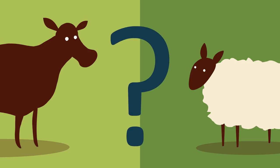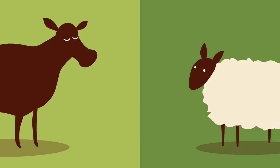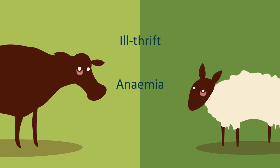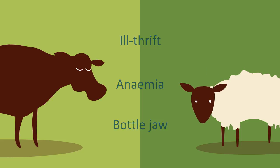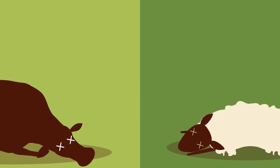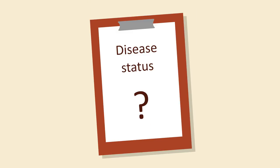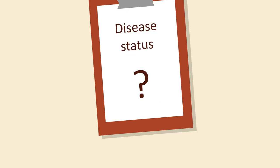So how would you know if your animals had fluke? There are a number of signs to look out for in live animals, specifically ill thrift, anaemia, and bottle jaw. Also investigate any sudden deaths or fallen stock, and always ask if any carcasses have shown signs of liver fluke infection at point of slaughter.